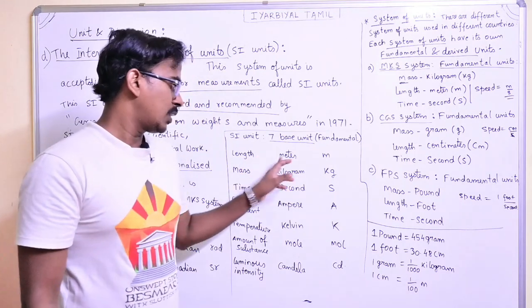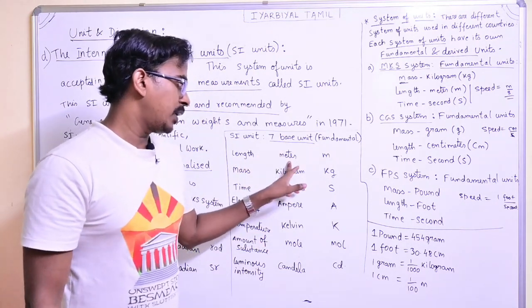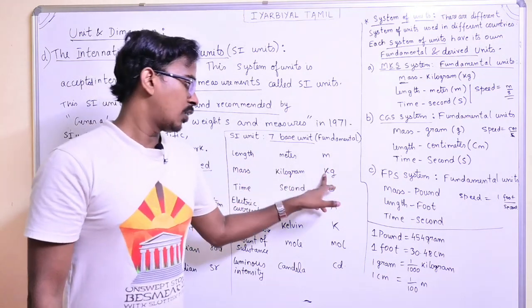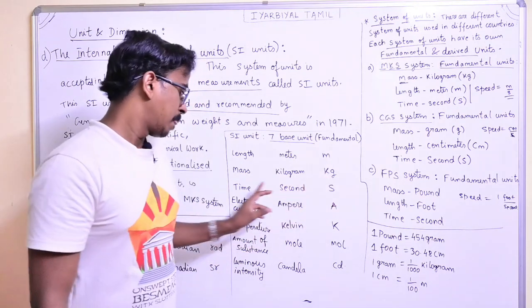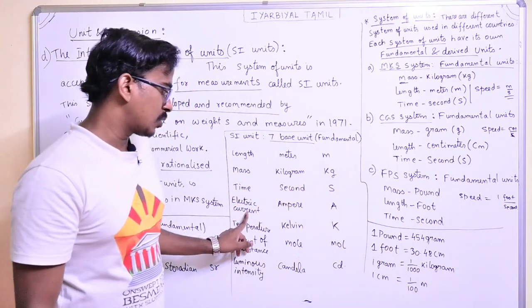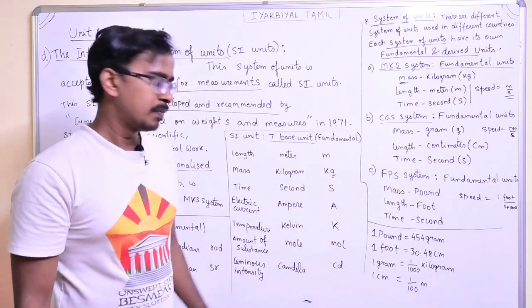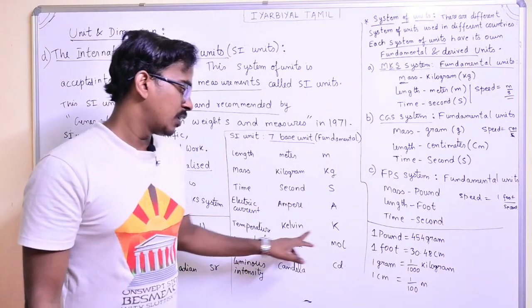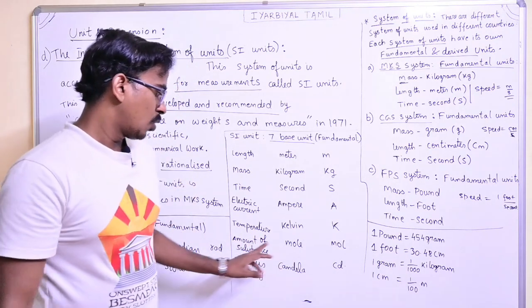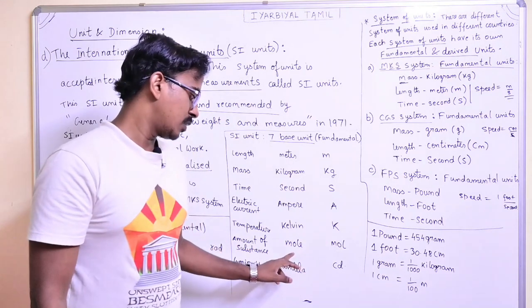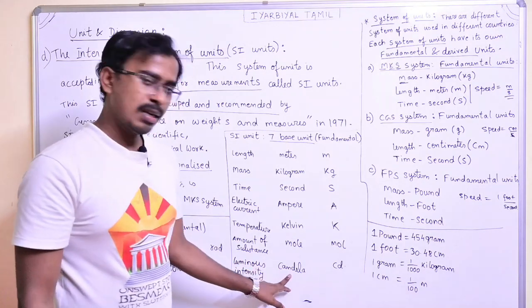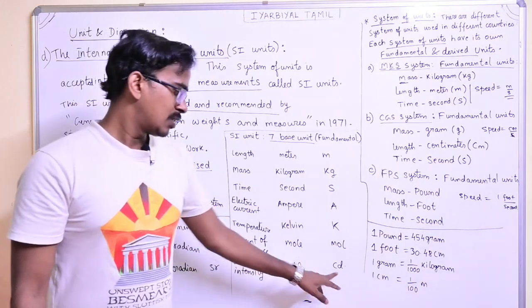The seven base SI units are: length is meter (symbol M), mass is kilogram (symbol Kg), time is second (symbol S), electric current is ampere (symbol A), temperature is kelvin (symbol K), amount of substance is mole (symbol mol — a chemistry-related unit), and luminous intensity is candela (symbol Cd).